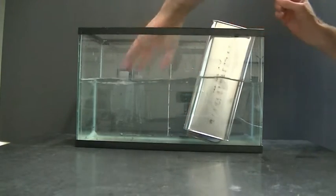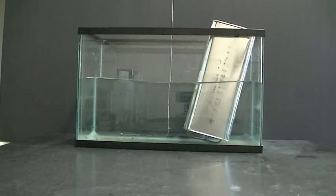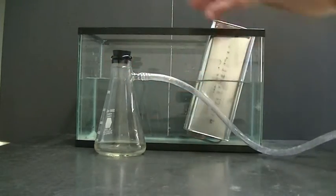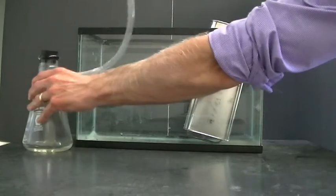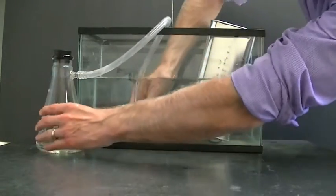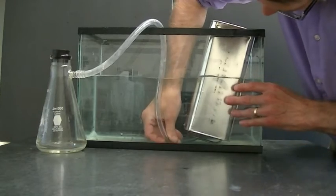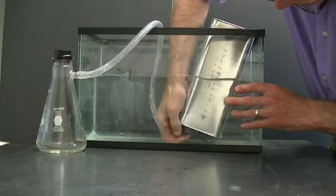Alright, next I'm going to take this side arm flask and this is where we're going to put the baking soda and vinegar. I'm going to take this side arm flask to which a tube has been attached and I'm going to make it so the tube goes up into our metal can.